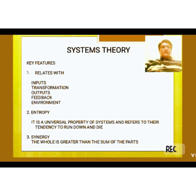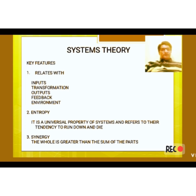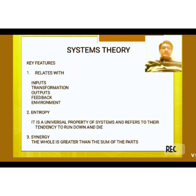The second key feature of systems theory relates to entropy. Entropy is a universal property of systems and refers to their tendency to run down and die — basically the tendency of systems to either run down or die.